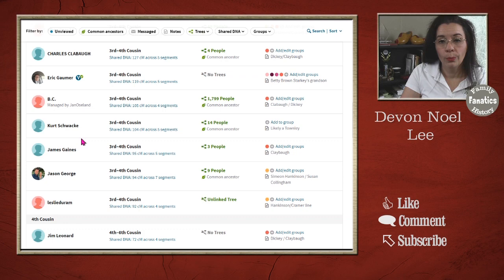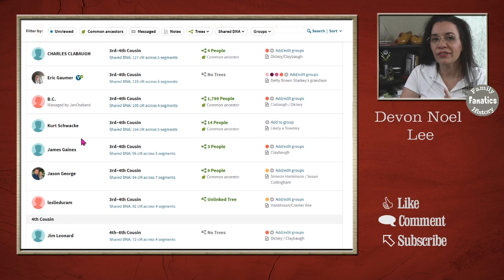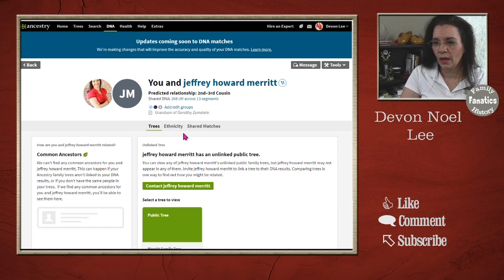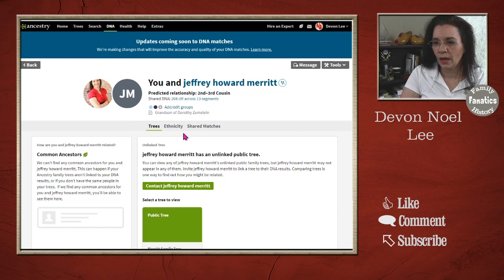Now, what happens if they are not yet in your tree, and you discover that they should be in your tree? What do you do then? Well, in that case, let's scroll up to Jeffrey Howard Merritt. Now, Jeffrey recently took a DNA test, and he has an unlinked tree. So if we click on him on link tree, you can tell I already know how he's related.